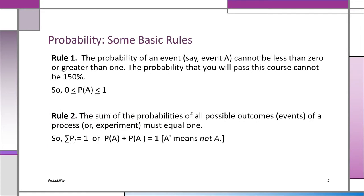Here are the basic rules of probability. Rule number one: the probability of an event will never be less than zero or greater than one. You're never going to have a negative probability, and you'll never have a probability greater than one. The entire universe is always one — there's no such thing as a 150% probability. Mathematically: 0 ≤ P(A) ≤ 1.